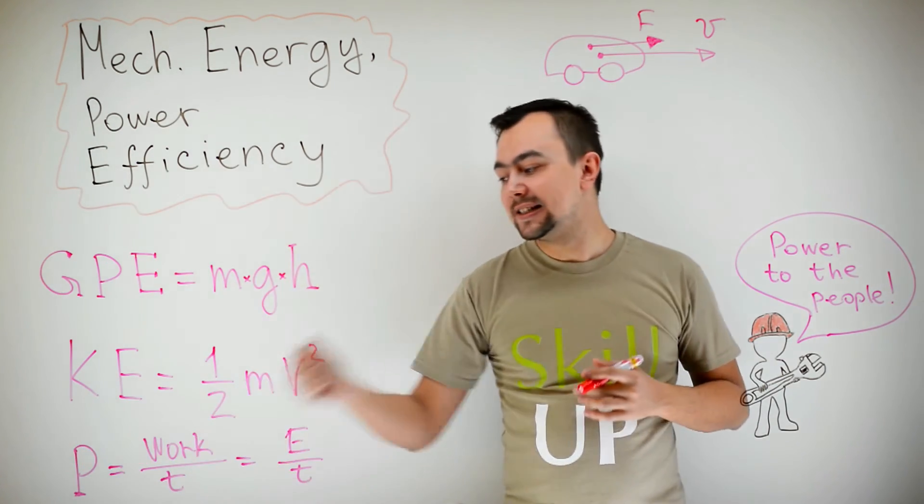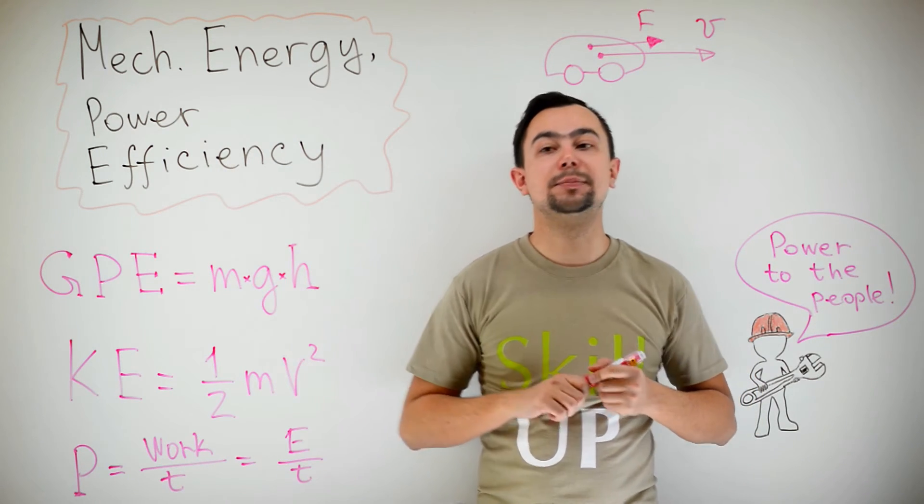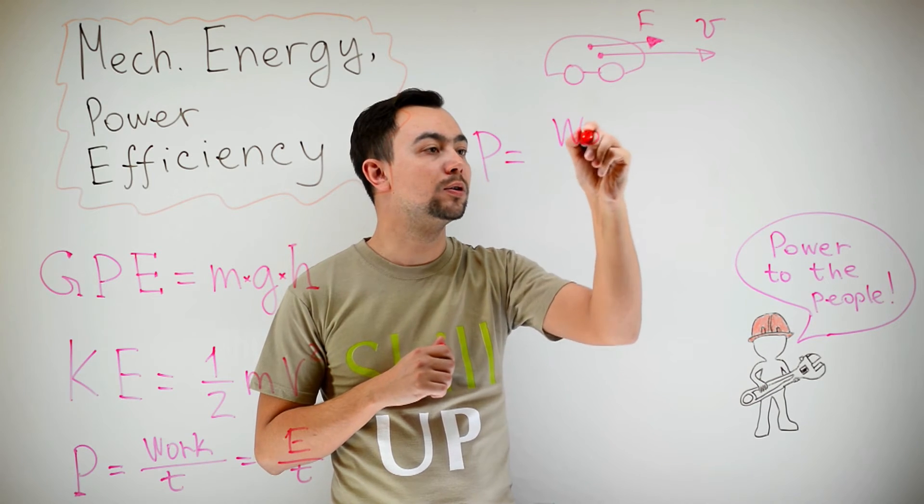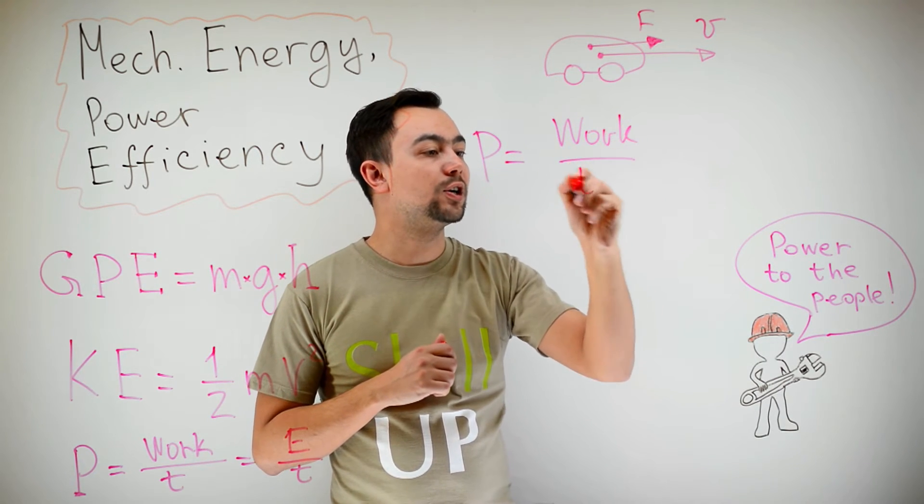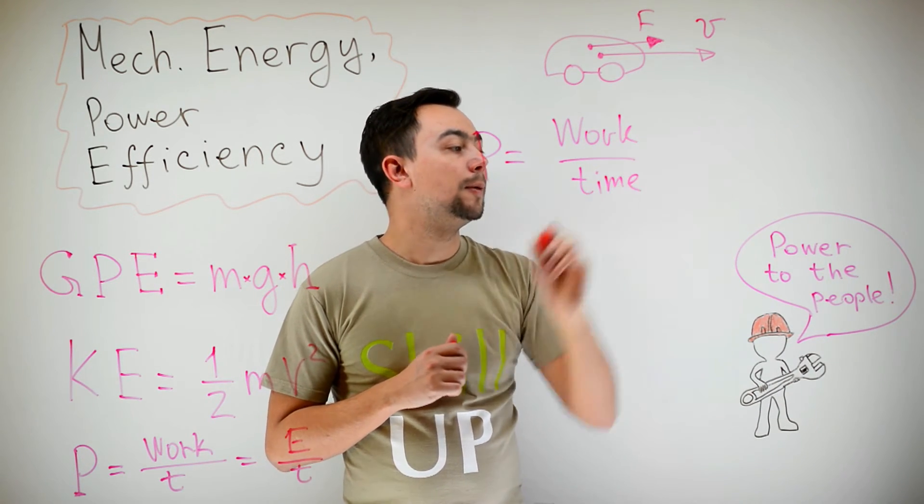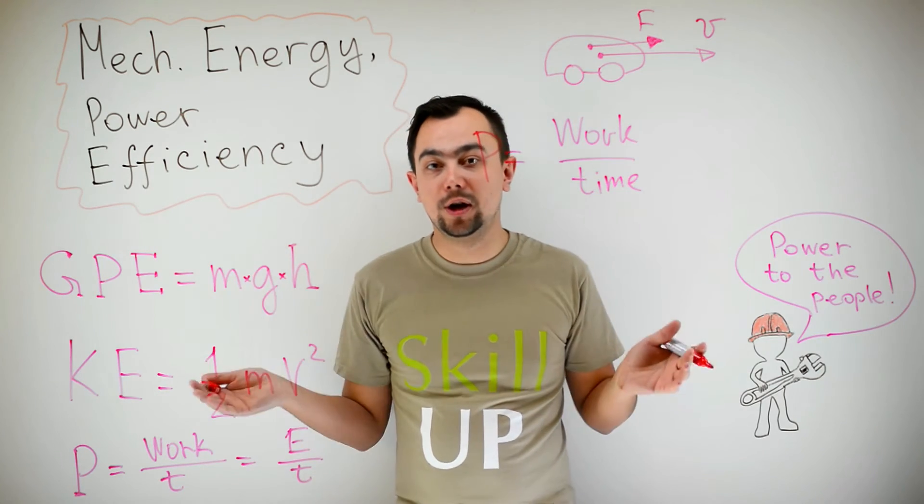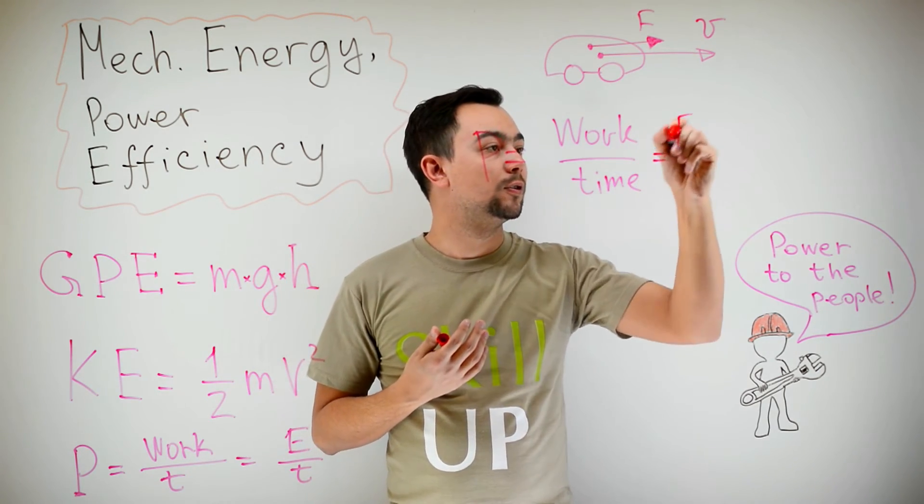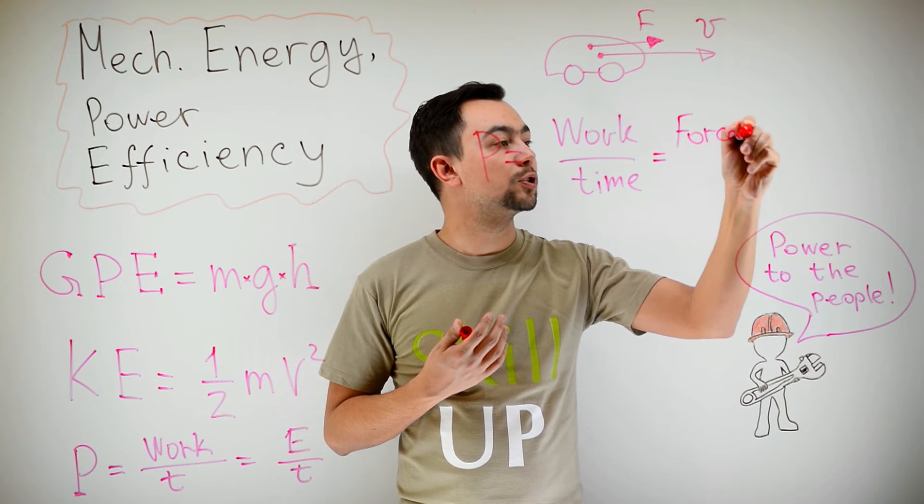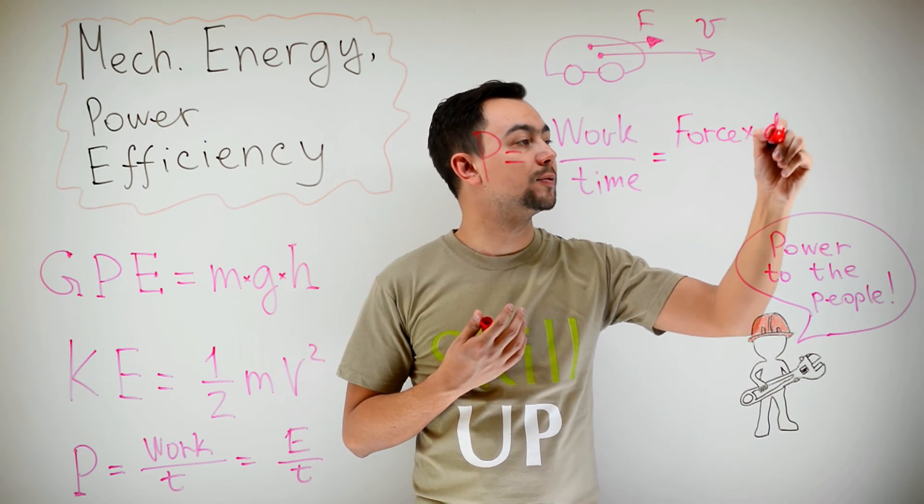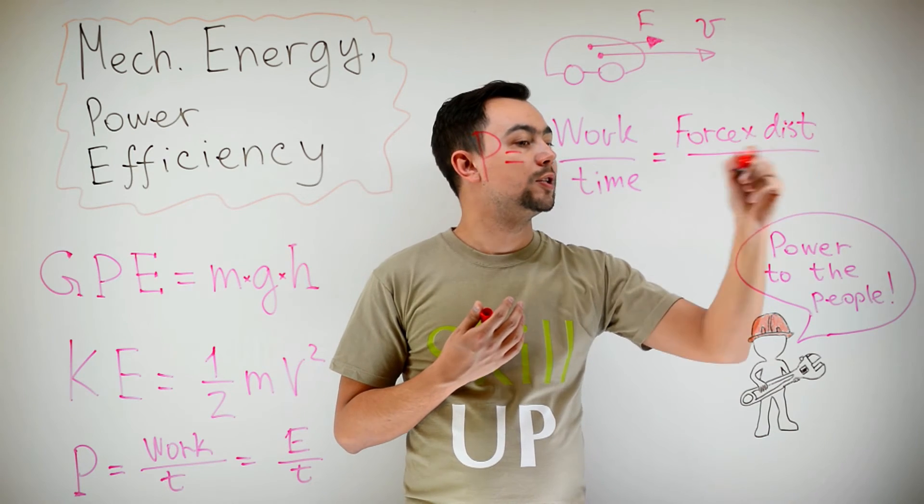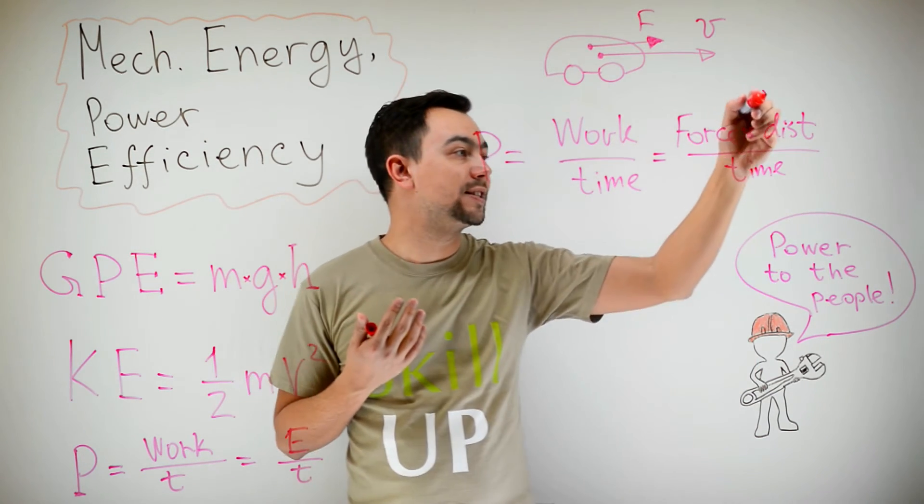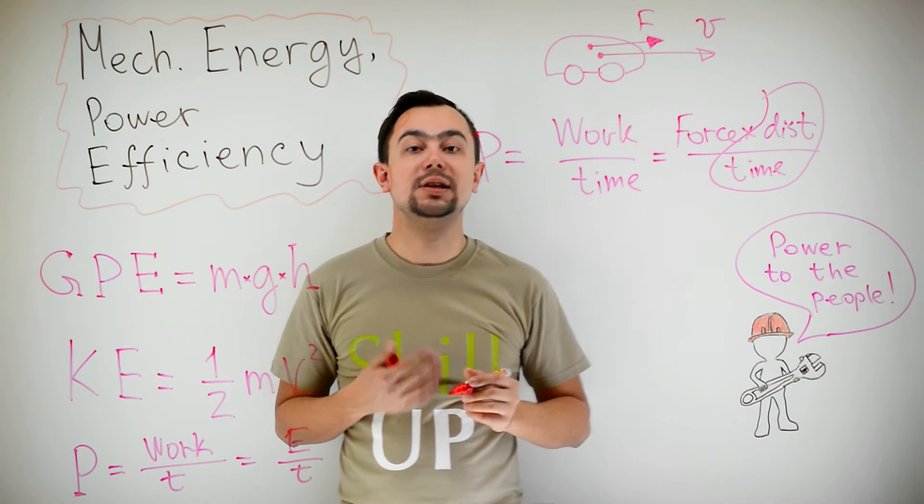Well, power is work divided by time. So, let's write that down. Power is work divided by time. But work, as we know, is force multiplied by distance. Force multiplied by distance divided by time. And distance divided by time is speed.